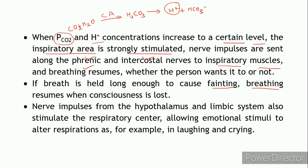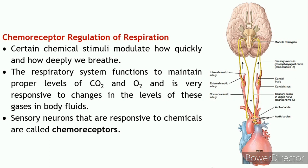Nerve impulses from the hypothalamus and limbic system can also stimulate the respiratory center. During emotional stimuli - such as laughing or crying - the breathing pattern is altered because of this influence of the hypothalamus and limbic system on the respiratory center.